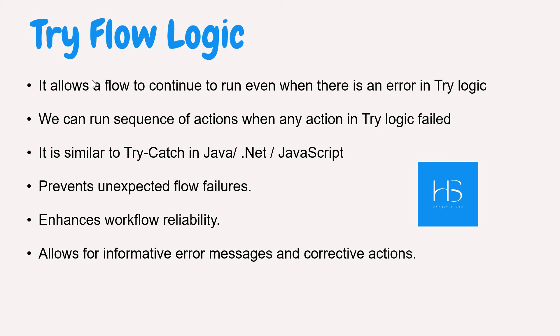Try Flow Logic allows a flow to continue to run even when there is an error in the trial logic. If you have defined a few steps in your try logic and any one of them fails, you can define in the catch block a sequence of steps that should run after the failure. Those steps are a kind of fallback method for your flow.